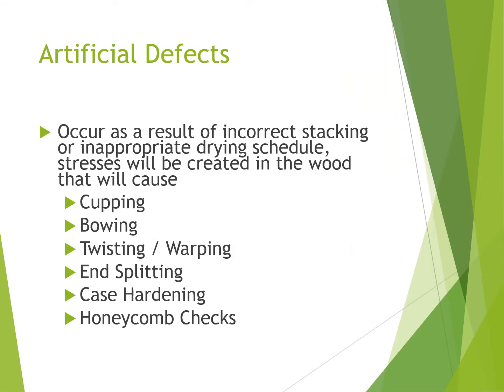Artificial defects are the result of incorrect stacking — not enough blocks underneath the plank. You load the next plank on top and a bow occurs in the planks that are stacked, making the board really hard to work with. This causes cupping, bowing, twisting, and warping. Splitting will occur when you don't paint the ends of the timber, and the drying process dries out the end too quickly — you can actually lose material off the end of your plank because of a crack or split.